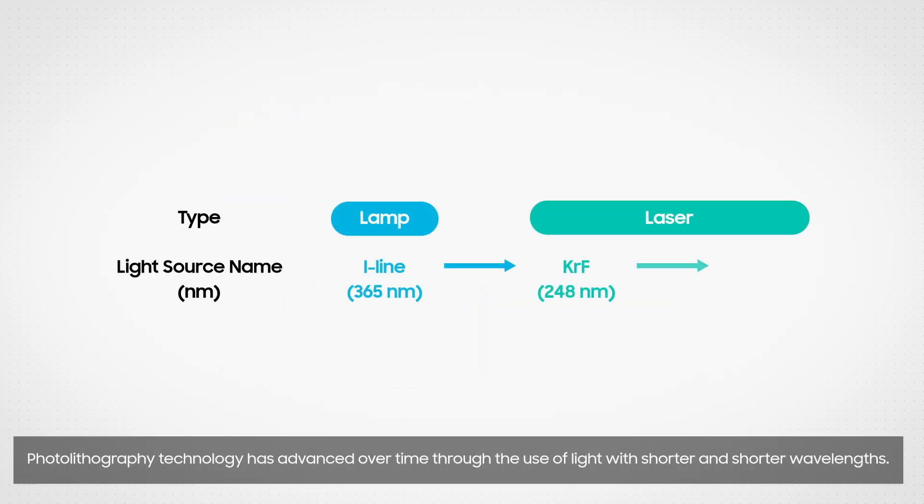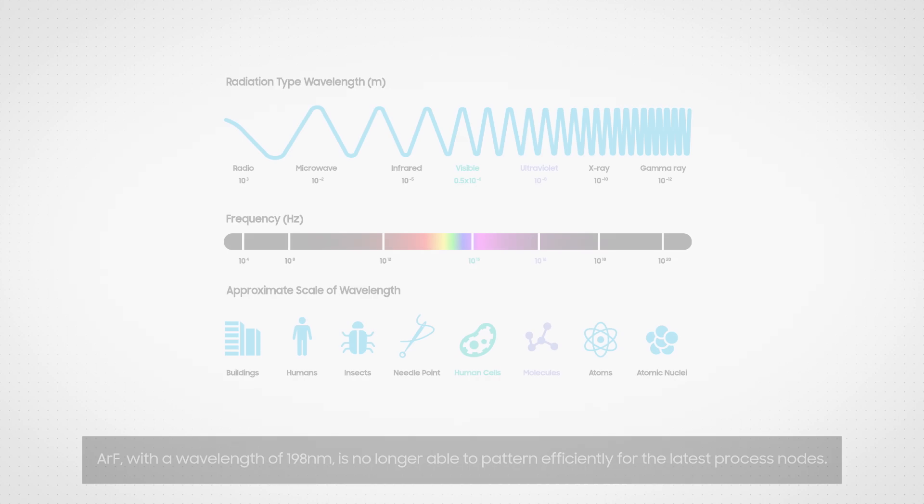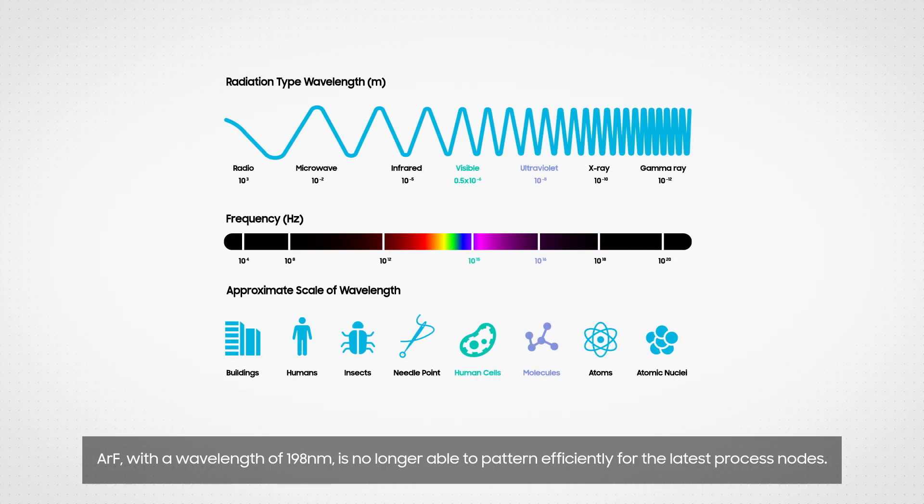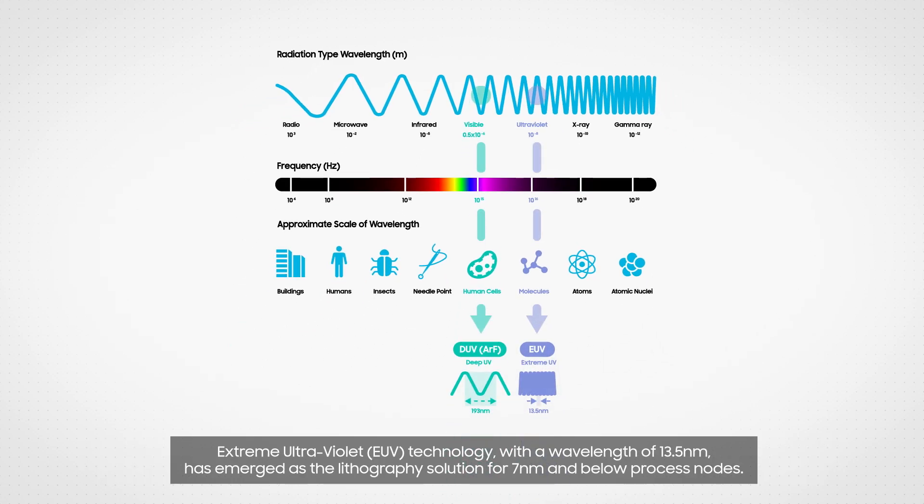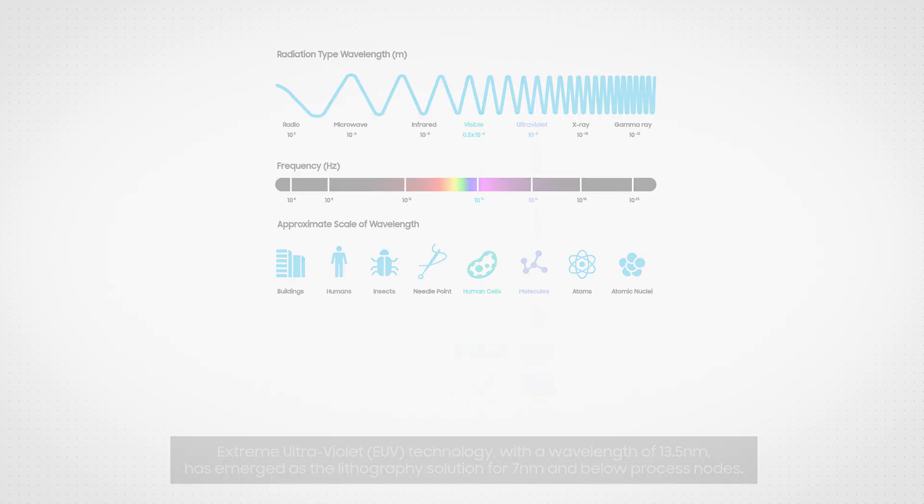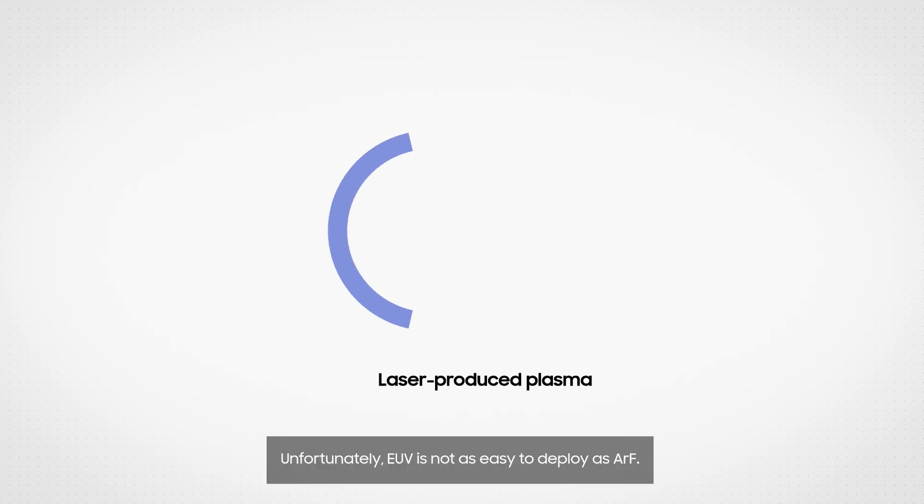Photolithography technology has advanced over time through the use of light with shorter and shorter wavelengths. ArF with a wavelength of 193 nanometer is no longer able to pattern efficiently for the latest process nodes. Extreme Ultraviolet (EUV) technology with a wavelength of 13.5 nanometer has emerged as the lithography solution for seven nanometer and below process nodes.